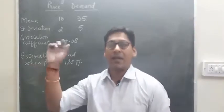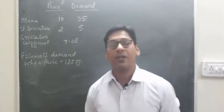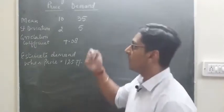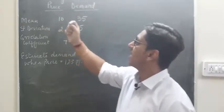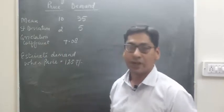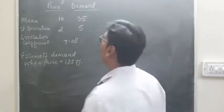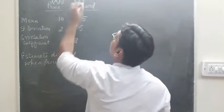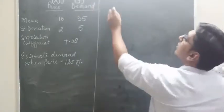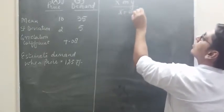Now let us see an example. We will understand how to find regression equations using the first method — when mean, correlation coefficient, and standard deviation are given in the question. Here we are given price and demand data: arithmetic mean (x-bar and y-bar), standard deviation, and correlation coefficient are given. We are also asked to estimate demand when price equals 12.5. First of all we assume price as x and demand as y, and we calculate the regression equations.